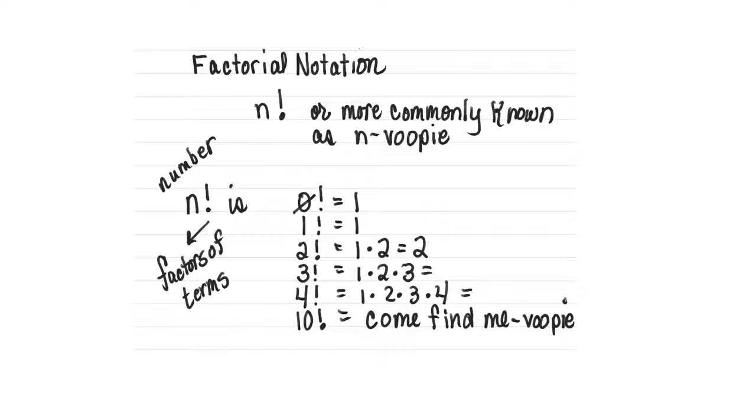A cute thing that happens with these is called factorial notation, or what we call an exclamation point, or more commonly known in my world as n vupi, because it's far easier to say than factorial notation 2 or factorial notation 3. In some cases you'd go 3 factorial notation, which is way too much for anybody to say, so I call it vupi.